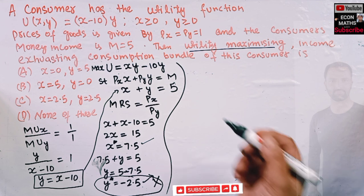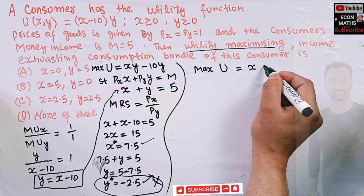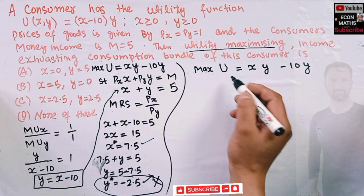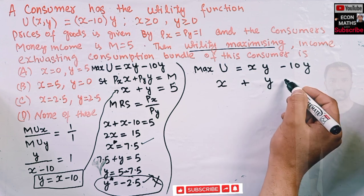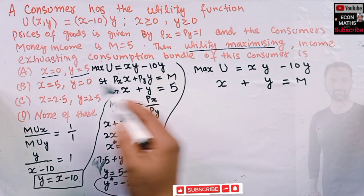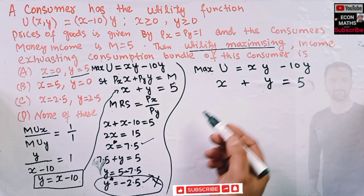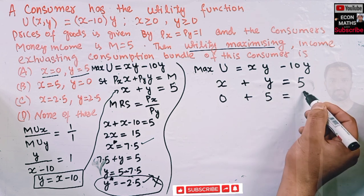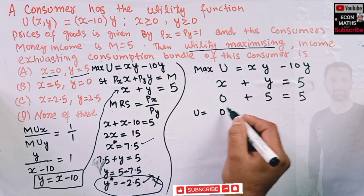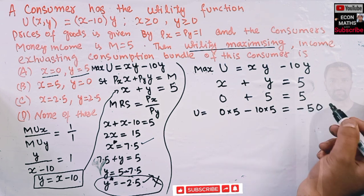Instead, let us use the elimination method and test the given options. We want to maximize U = xy minus 10y, subject to x plus y = 5. First option: x = 0, y = 5. The budget constraint is satisfied: 0 plus 5 = 5. The utility is U = (0)(5) minus 10 times 5 = 0 minus 50 = negative 50.